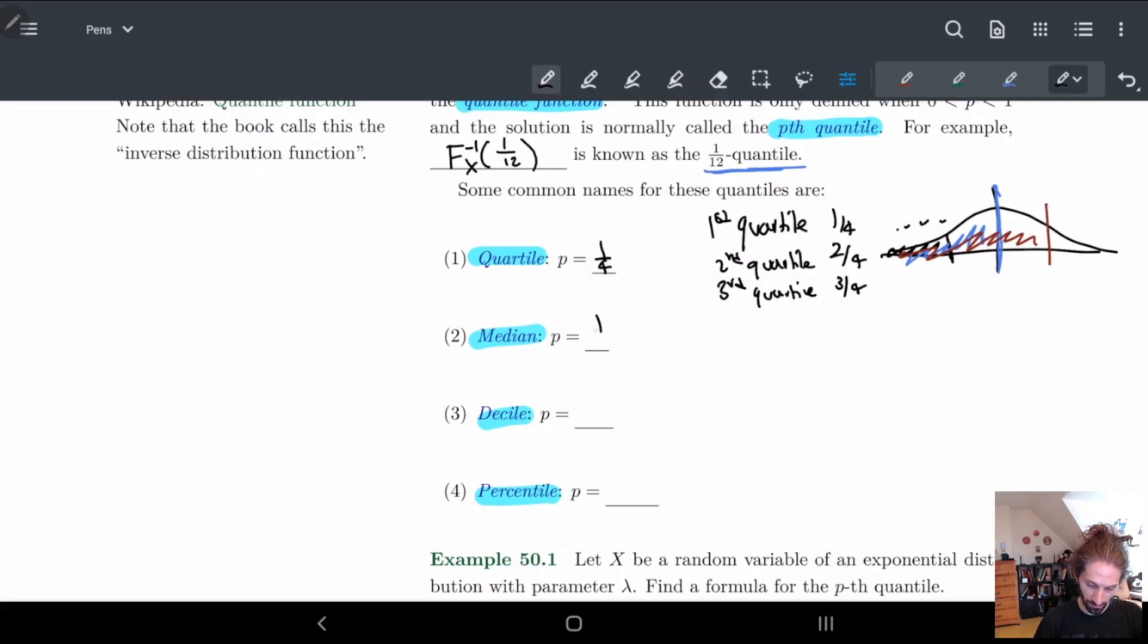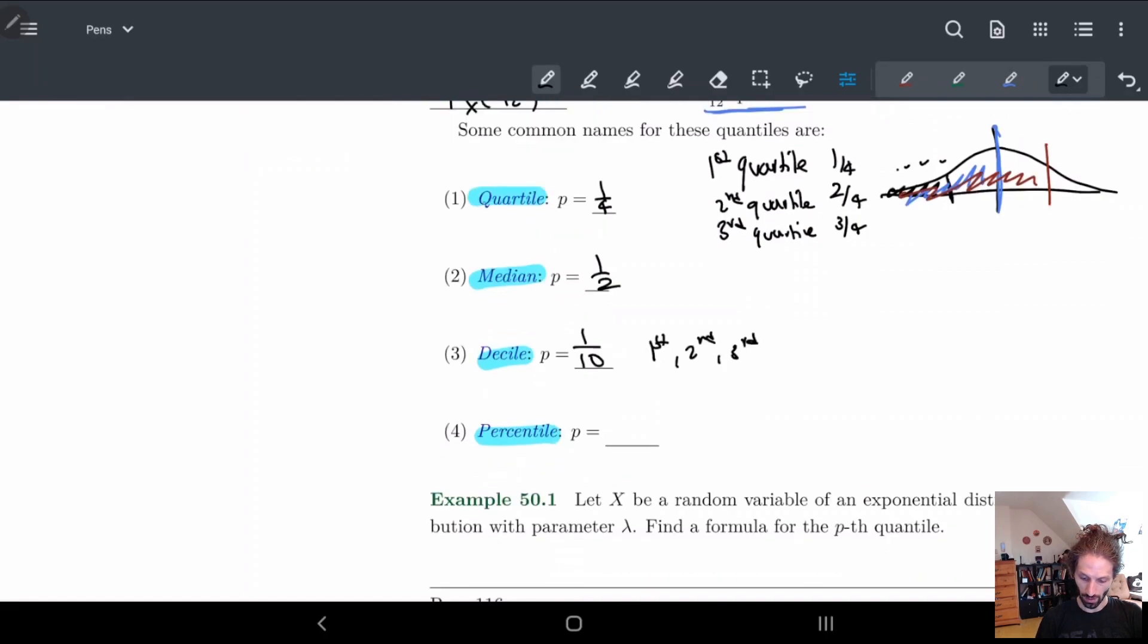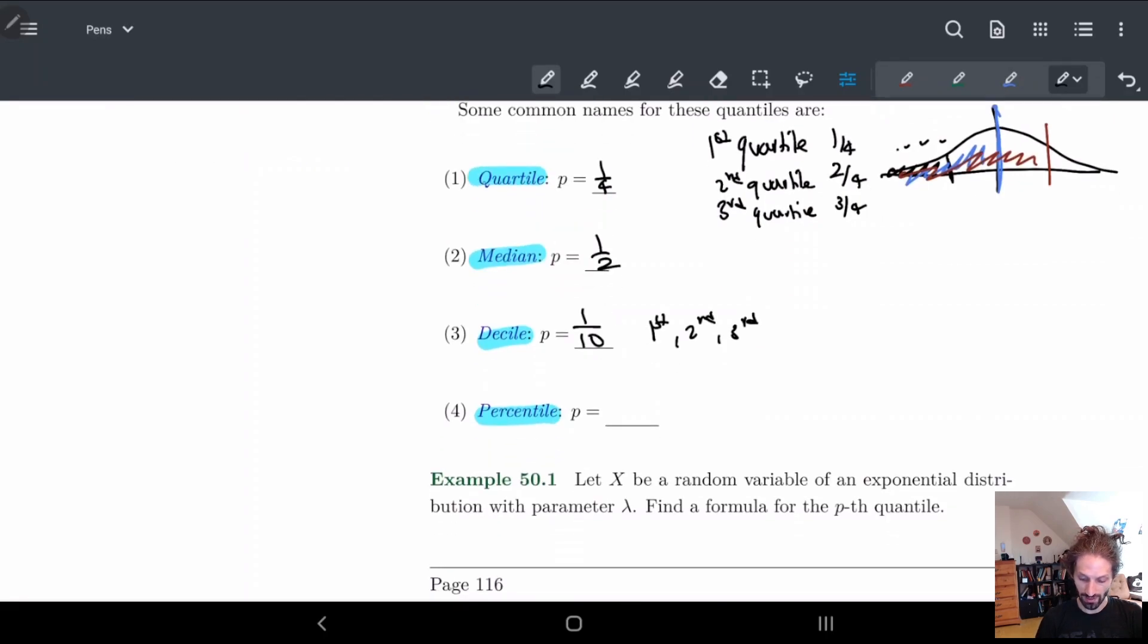Decile - at this point you should start figuring out what this should be - this is one-tenth, and we can do the same thing, so we should have first, second, third decile, etc. If you're in the third decile, that means you're above 30 percent of people. Percentile is 1 over 100. So if you're in the 70th percentile, that means you're higher than 70 percent of people.